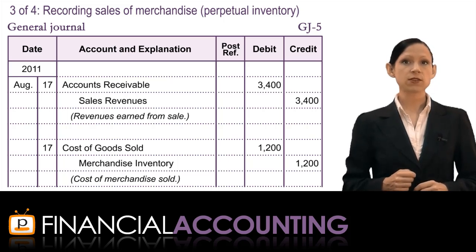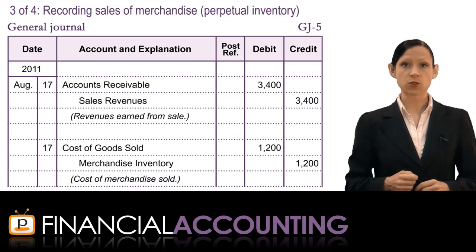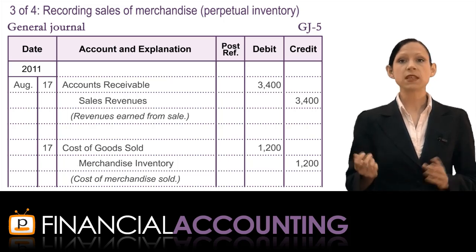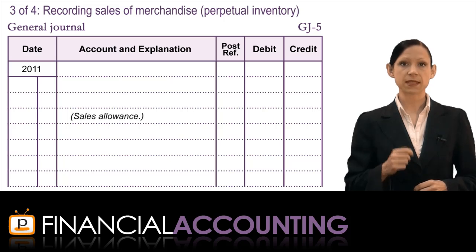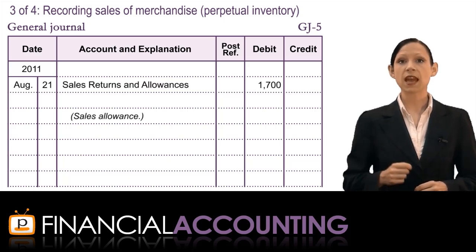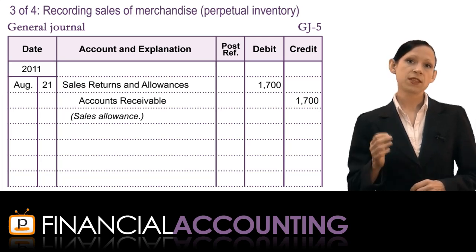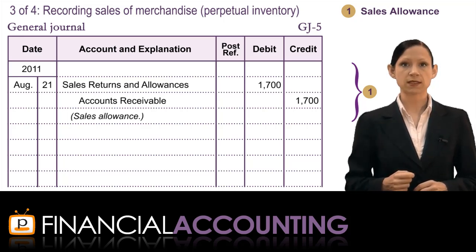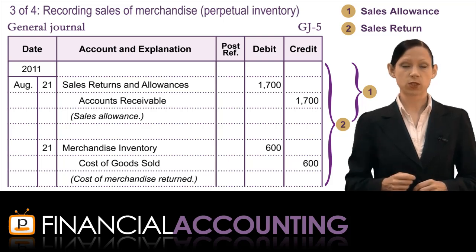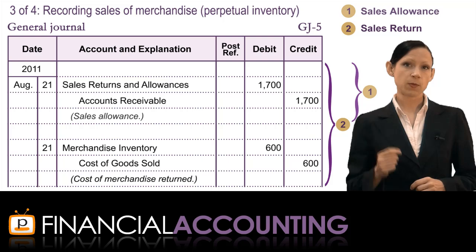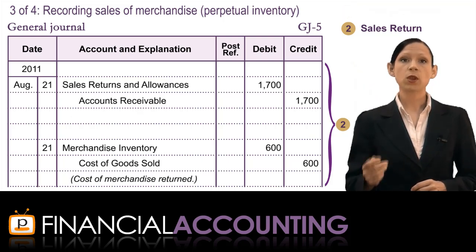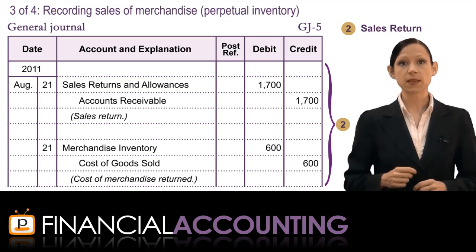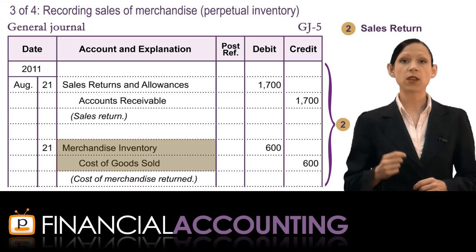When we sell merchandise, there are times we refund the customer some money — perhaps because the merchandise was damaged or faulty. To separately track these refunds, instead of reversing the original sales entry, we debit the sales returns and allowances account and credit cash or accounts receivable. The difference: in an allowance, we refund some or all of the purchase price but keep the goods; in a sales return, the customer also returns the inventory. Under the perpetual system for a sales return, we also debit merchandise inventory and credit cost of goods sold for the value of inventory returned.